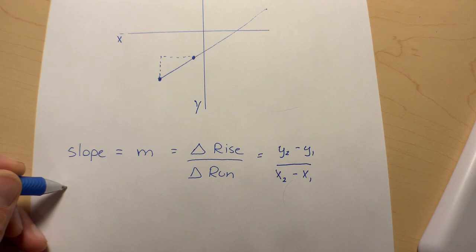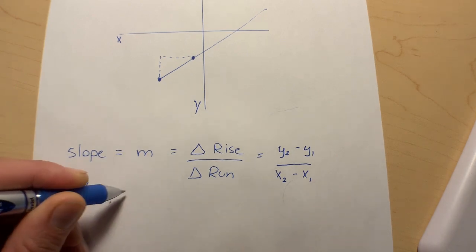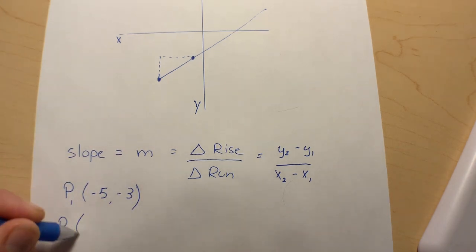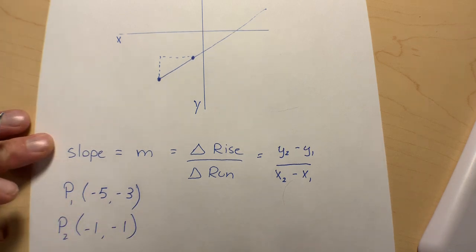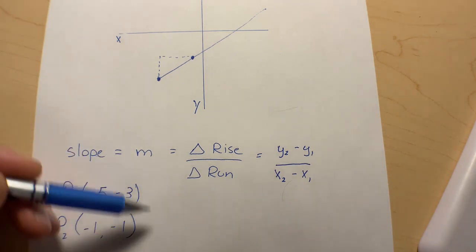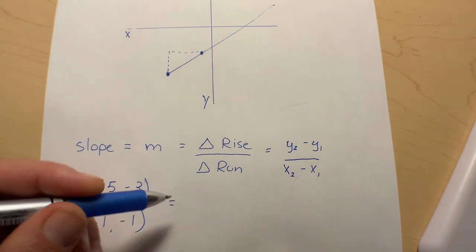This becomes really easy if somebody gives you two points. So I'm going to take two points here: point number one is (-5, -3) and point number two is (-1, -1). These are two points, and what I'm going to do is just put these into this equation and see if we can figure out slope.